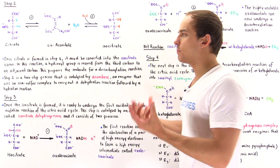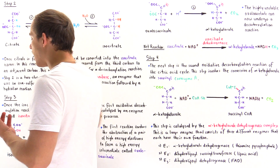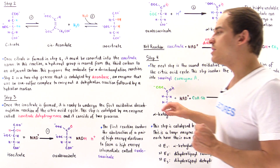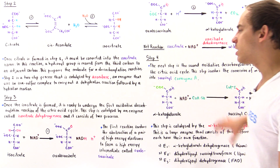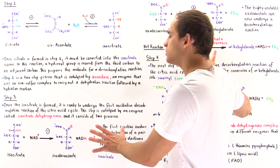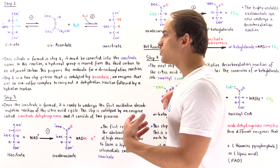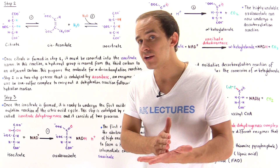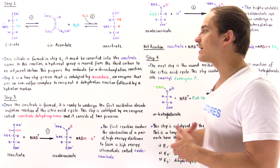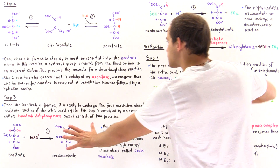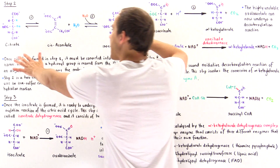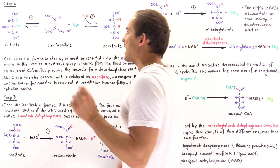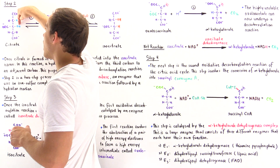The entire point of step two is to take the citrate molecule and prepare it for oxidative decarboxylation that will take place in steps three and four. In those steps we'll produce carbon dioxide molecules and abstract high-energy electrons for the electron transport chain, but first we must prepare citrate by changing the position of its hydroxyl group.